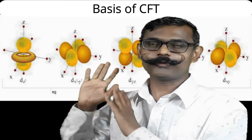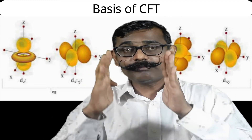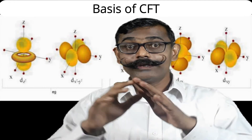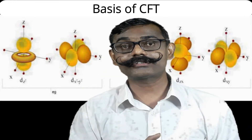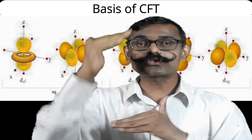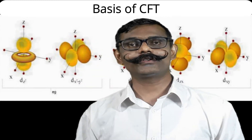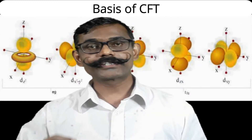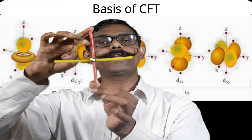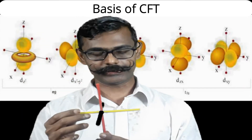This is very important. If this imagination — if these shapes are clear to you — then the next part, the interaction and accordingly the energetics of various orbitals, will be perfectly clear to you. To make this concept clearer, I will explain using this model.